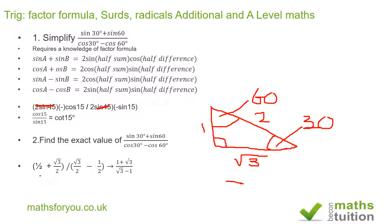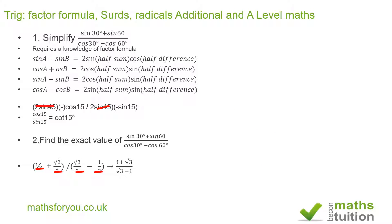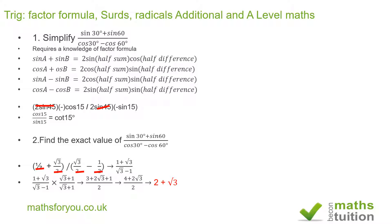The numerator is one half plus root 3 over 2. The twos in the denominator all cancel out, leaving 1 plus root 3. Similarly the denominator becomes root 3 minus 1. Because we don't want surds or radicals in the denominator, we multiply numerator and denominator by the conjugate, root 3 plus 1.